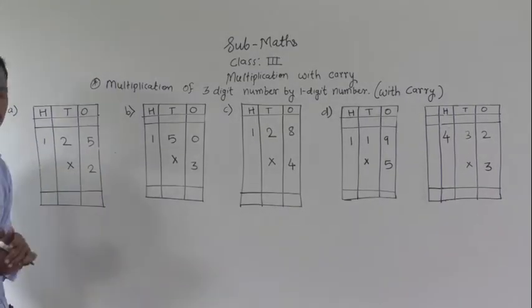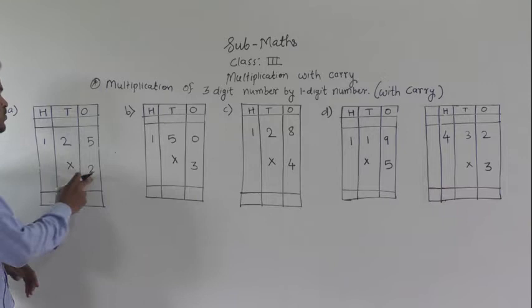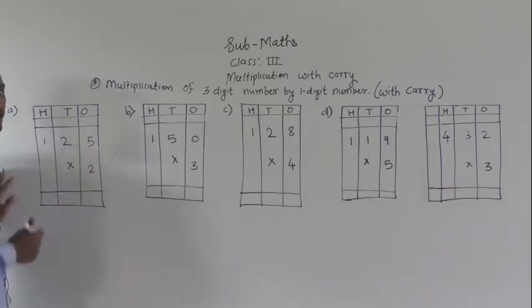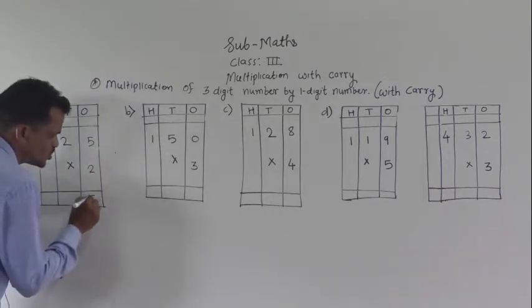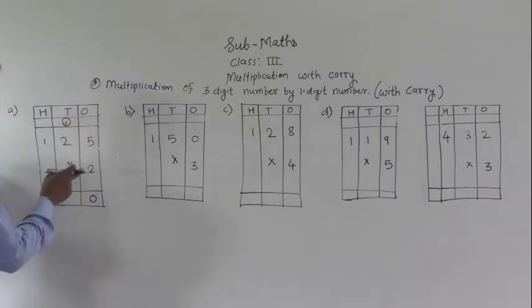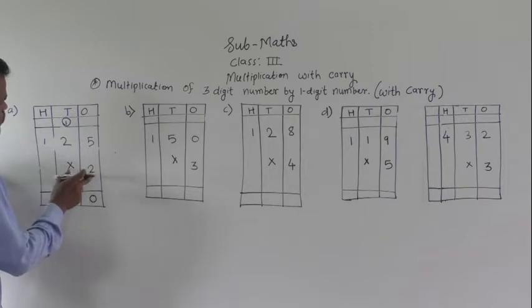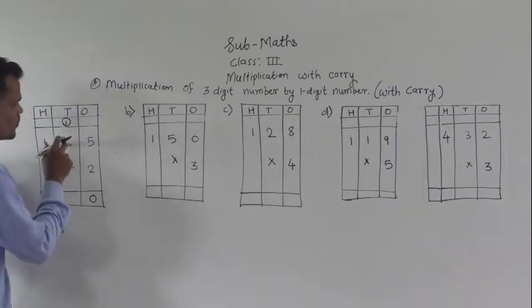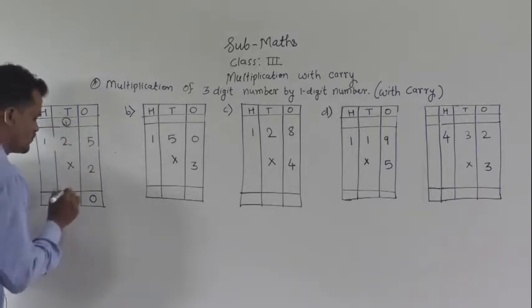Always start from the ones place. Recite the table of 2 up to 5. 2 times 5 is 10. Write 0 here and 1 carry. Next step, multiply this tens digit by 2. 2 times 2 is 4. 4 plus 1 is 5.